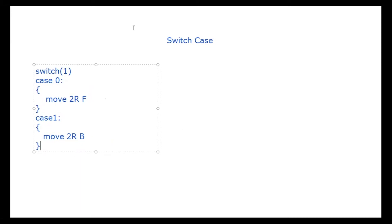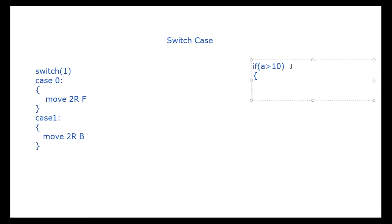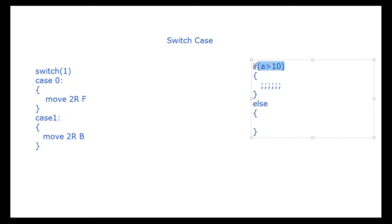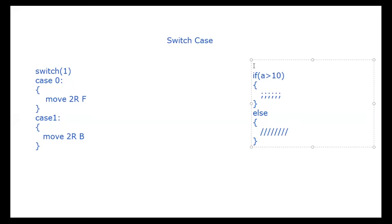Similarly, with a condition block, if you give a condition like 'a greater than n' and it is true, the code inside that block will execute. If you add an else block and the condition is false, it will execute the else block. For example, if a equals five and the condition is 'five greater than ten' — that is false, so the if-block is skipped and the else block is executed.